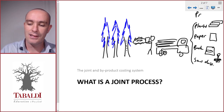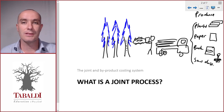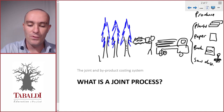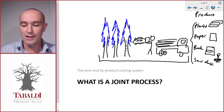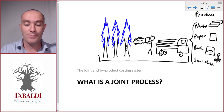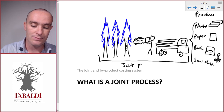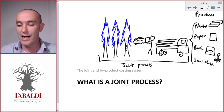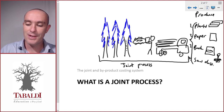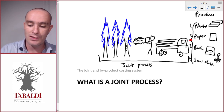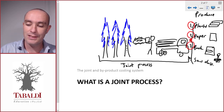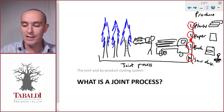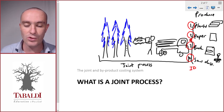So these are the four products that come from this process. Before the products become identifiable, a lot of costs have already been incurred. All four products come from the same process — this is called the joint process. None of these four products can be identified before a specific point; only once we start cutting and sorting the pieces can we identify the different products.